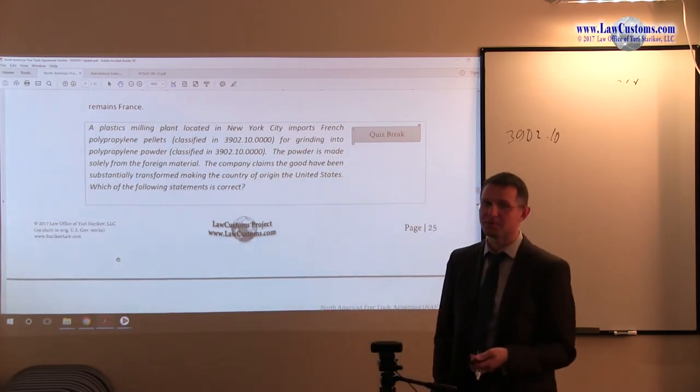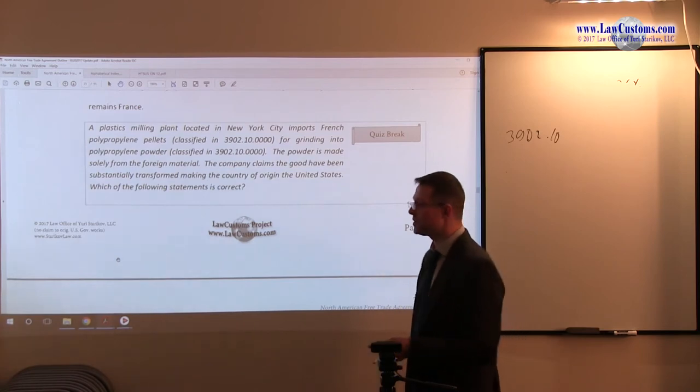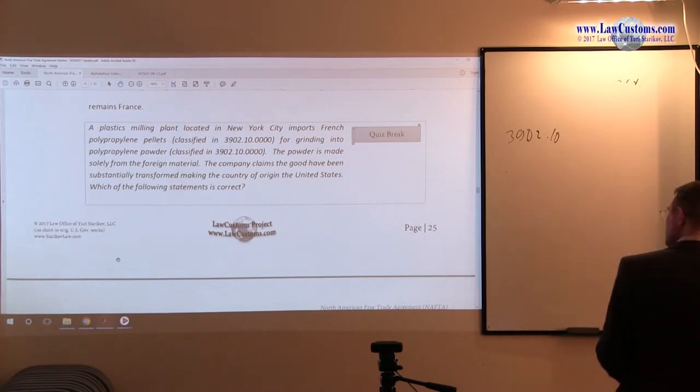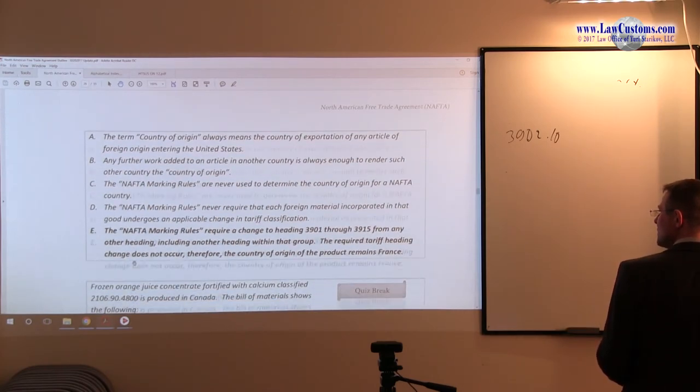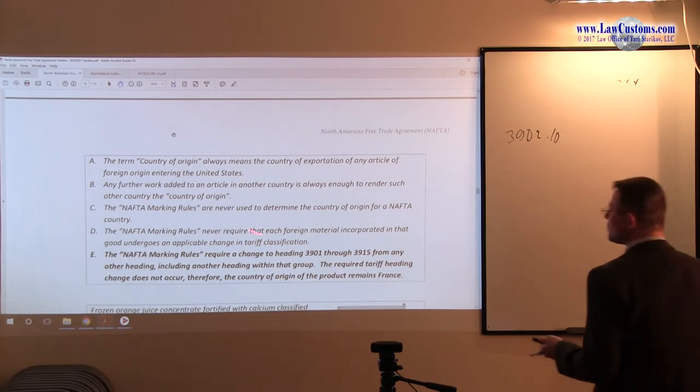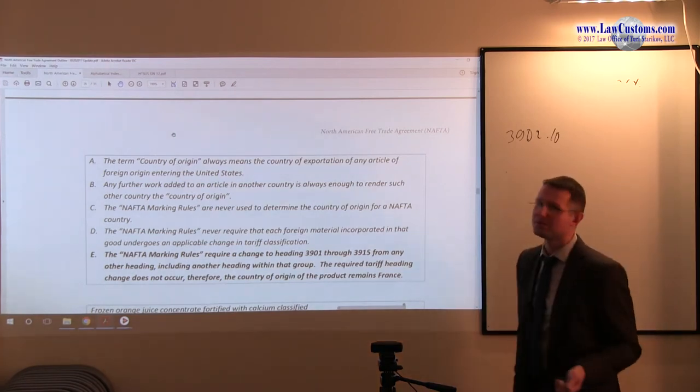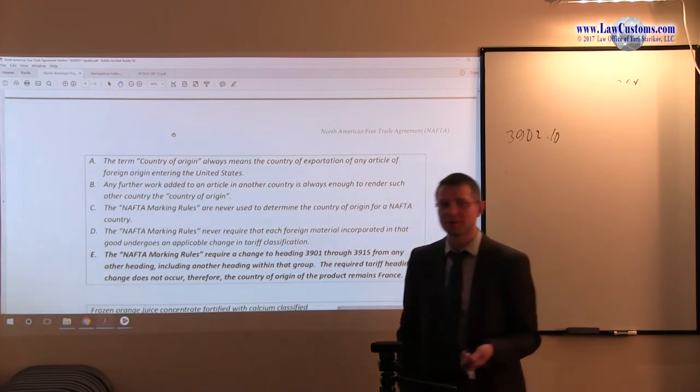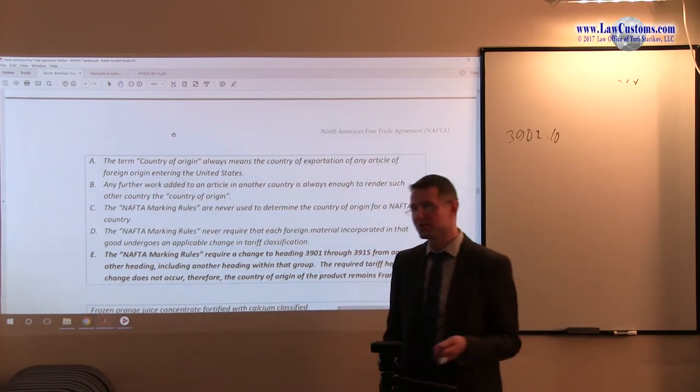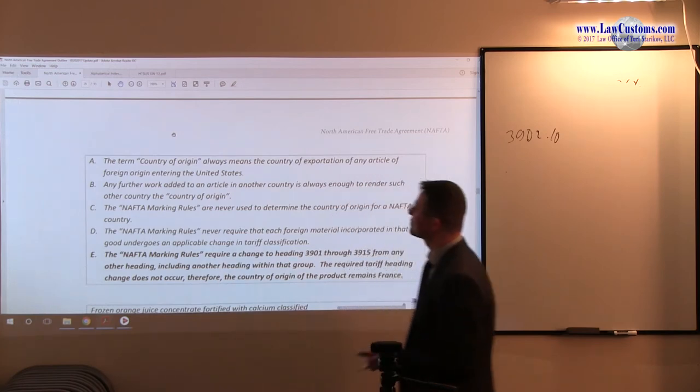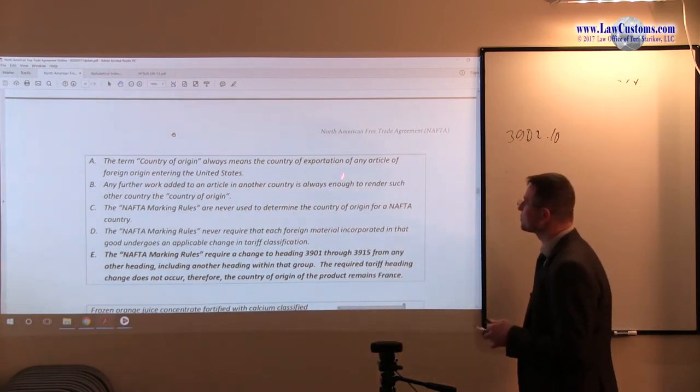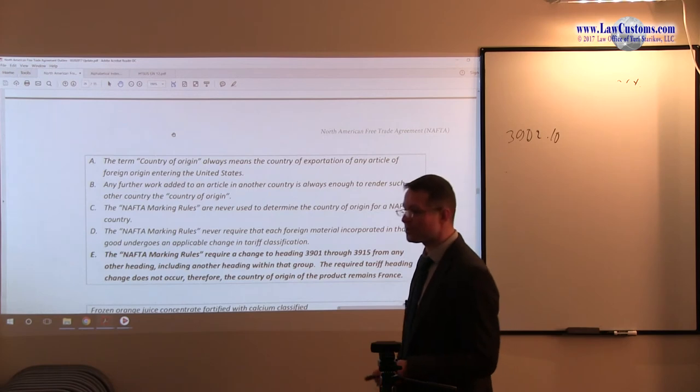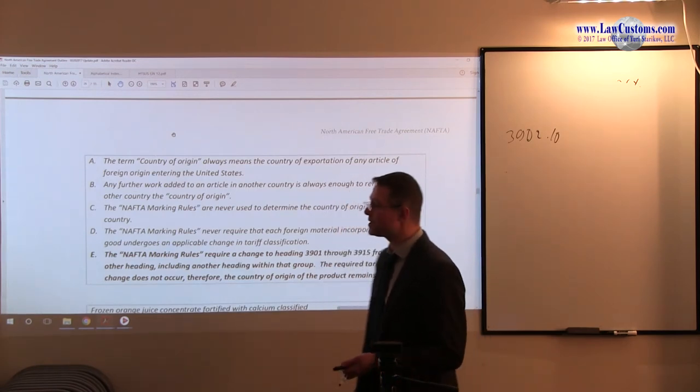Notice how customs examiners ask you about this stuff. They do not specify NAFTA marking. They just give you the United States, implying that this is a NAFTA member, because the United States, Canada, and Mexico are the NAFTA members. So while looking for the correct statement, no change in tariff classification has been taking place. So the term country of origin always means the country of exportation? No, country of origin is the country where there has been substantial transformation unless there are other requirements such as NAFTA requirement of tariff shift. Country of exportation is actually a separate box on the declaration form. So that statement cannot be true.